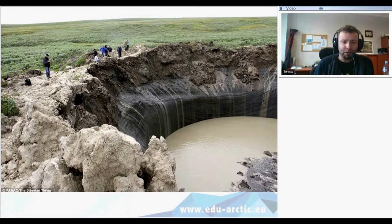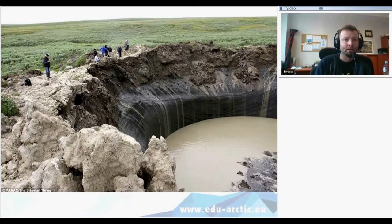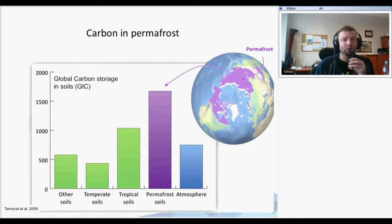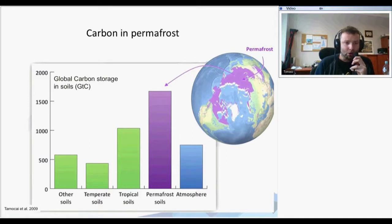When the permafrost thaws, you can see — for example in Siberia — there is a huge hole in the ground because the permafrost thawed, collapsed, and the water just went through. It's really important that permafrost contains lots of carbon and also other greenhouse gases such as methane. Global carbon storage in different soils is shown here on a chart — the amount of carbon stored in permafrost soils is more than one and a half thousand gigatons.